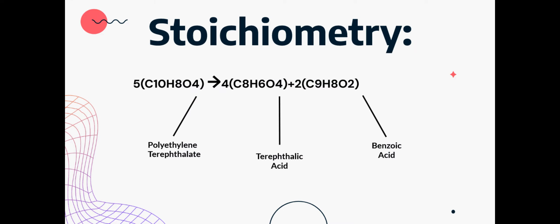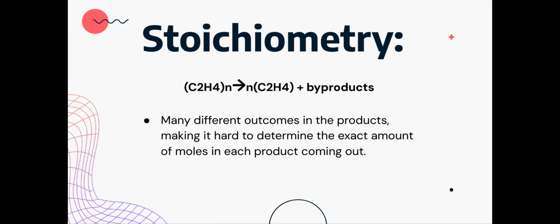There are two types of common plastics put into our pyrolysis. Polyethylene terephthalate, which gives us terephthalic acid and benzoic acid with a base ratio of 5,4,2. And the other one is polyethylene, which will have a main outcome of ethylene and way too many byproducts that are impossible to fit on one slide.